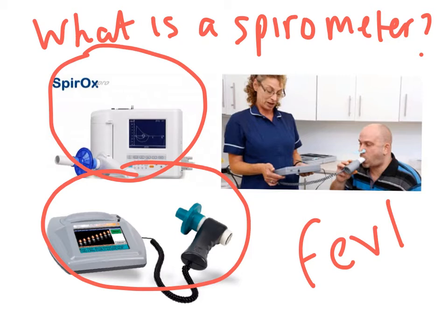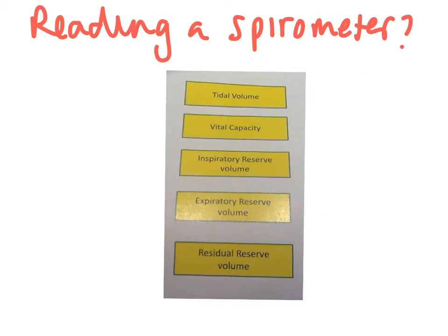In order to read a spirometer, you need to understand five key terms which we've covered previously. First is tidal volume — like a tide going in and out, it's your normal breathing rate. Tidal volume is the amount of air you breathe in and out during one breath. During exercise, your tidal volume increases as you breathe more deeply, because you need more oxygen to help release energy to the muscles during aerobic activity.